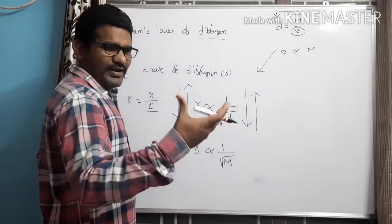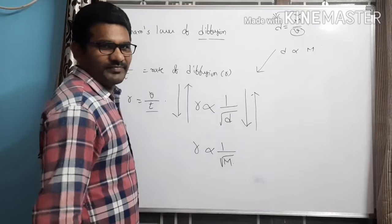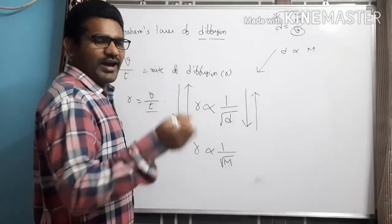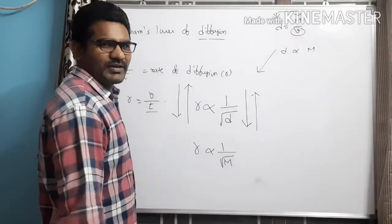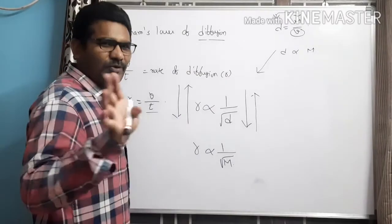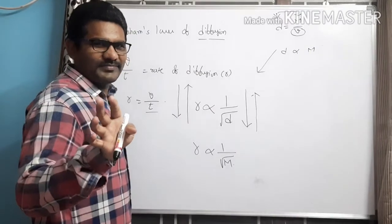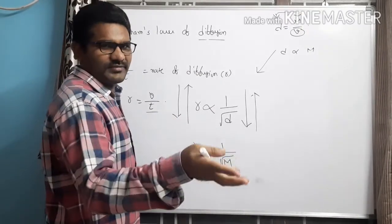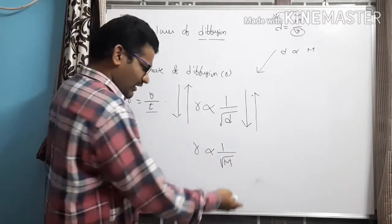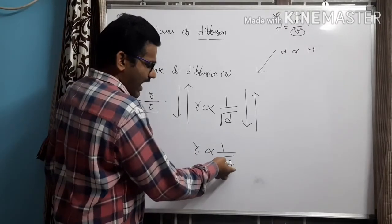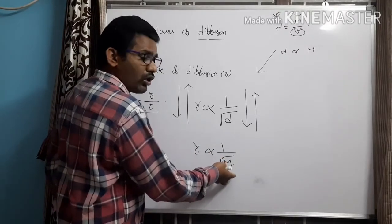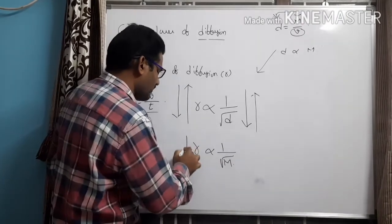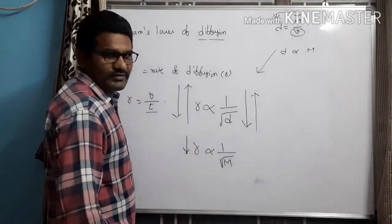Here is a simple example: when two persons — one fat and one thin — are running a race, generally who will win? Generally the thin person will win the race. Similarly, when a gas has more molecular mass, its rate of diffusion will be less.